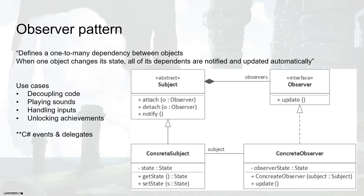Using the observer pattern, NPC characters can instead register for an event on the player object — for example, an 'on equipped' event. When the player equips the sword, all registered objects are notified automatically. In this way, NPC characters know the player has equipped a weapon and can start running away. This is more efficient compared to the polling-based approach because there are no continuous checks happening.